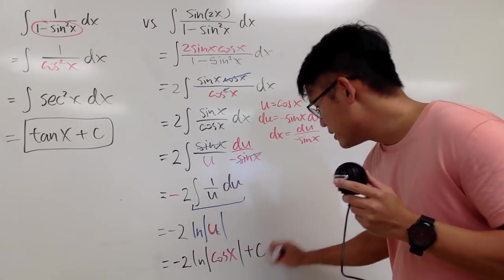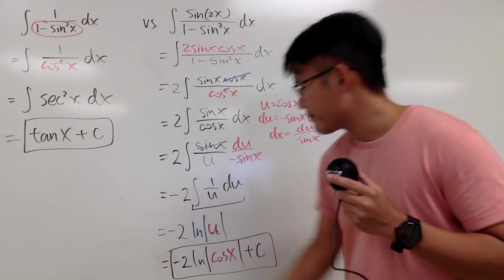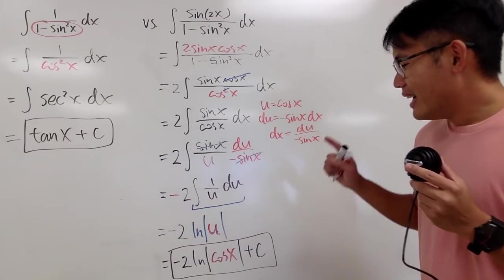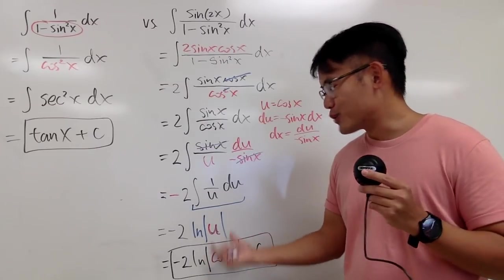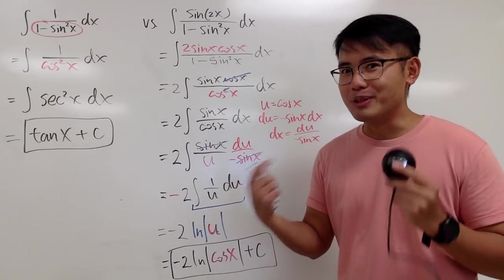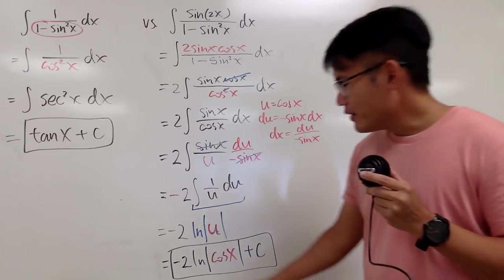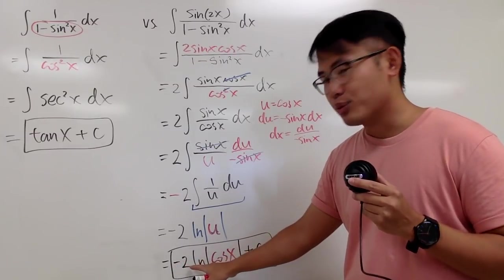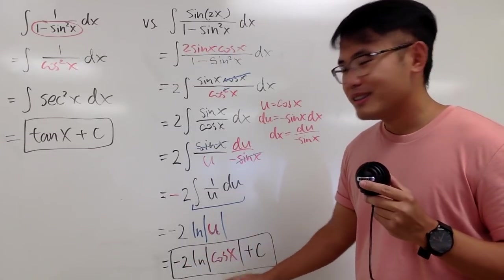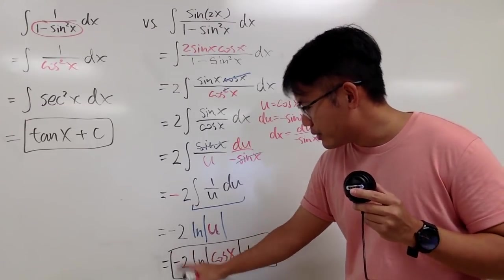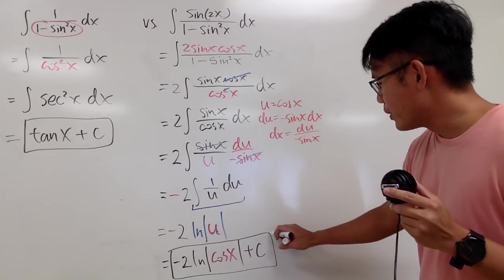If you'd like, you can box this as the answer. Notice, though, there are a few other ways to write this, just because of trig identities. One way: we have negative 2 in front of the natural log, so we can actually bring the negative 2 up to the exponent.